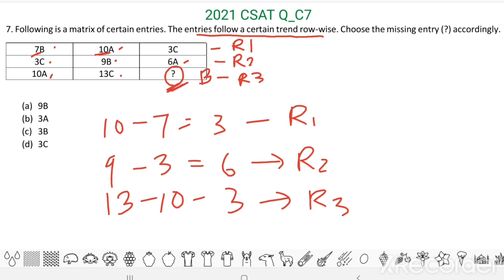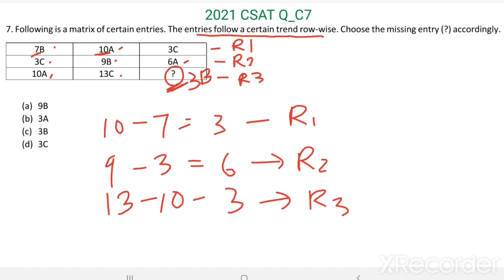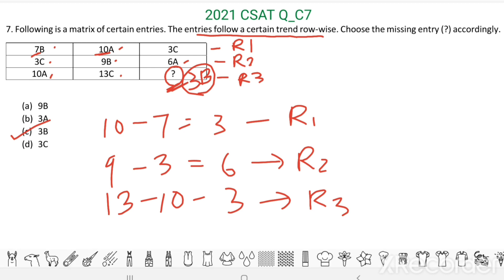Then here it should be three. So the missing entry is three B. Option C, three B. Thank you.